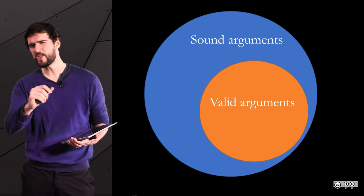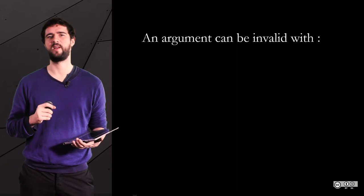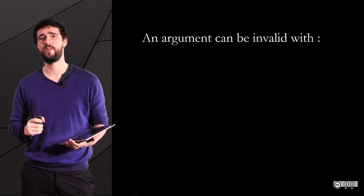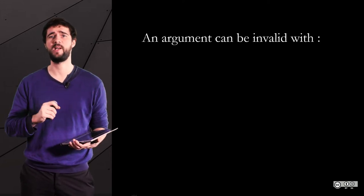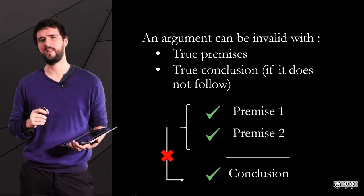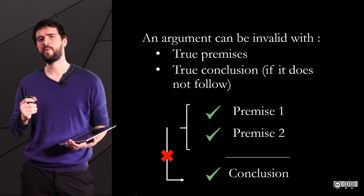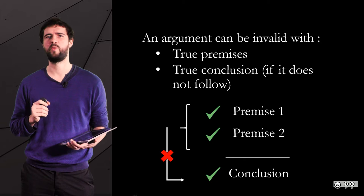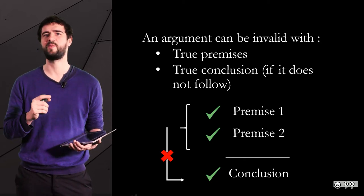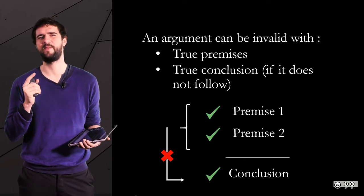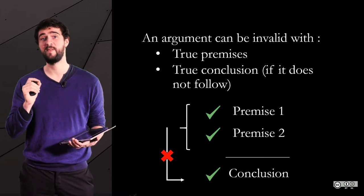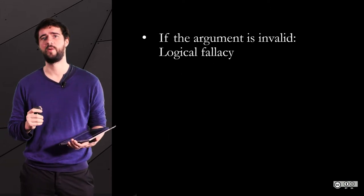A logical fallacy corresponds to an invalid argument, when the conclusion does not follow from the premises. So be careful about that — an argument may not be sound because one or more premises are false, but it does not mean it is a fallacy. Fallacies only correspond to invalid arguments, where the structure is wrong.